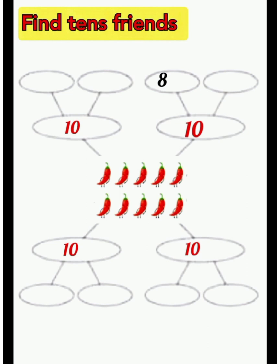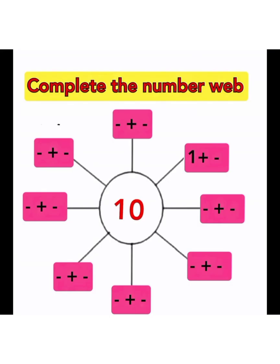Next, find out the friends of tens. Five plus five equals ten. Eight plus two equals ten. Seven plus three equals ten. Two plus eight equals ten. All of you complete the number web in your notebook — it's also based on the number ten.